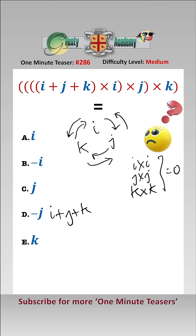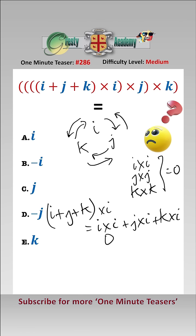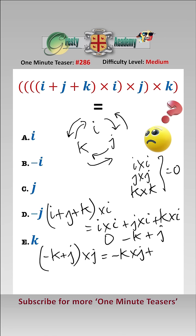So now we can expand. We have (i plus j plus k) cross i, which equals i cross i, plus j cross i, plus k cross i. That equals zero, minus k, plus j. Now we have (minus k plus j) cross j, which equals minus k cross j, plus zero, which equals i. So finally we have i cross k, which equals minus j — that is answer d.